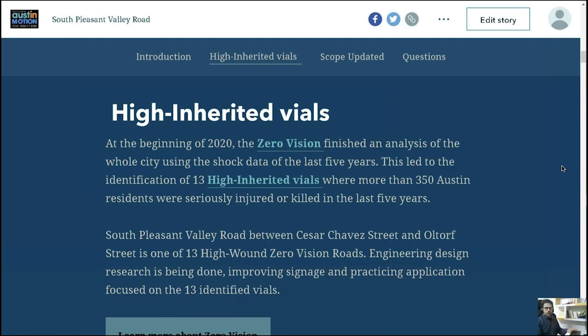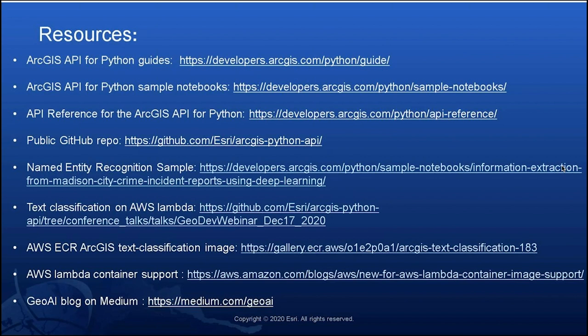We have now concluded an overview of what has been added and updated in the latest release of the Python API, which is going live today. For a deeper understanding of newly added models, you can visit the developer's website and go to the guides section. If you want to see more examples, go to the sample notebook section. To see the latest development on sample notebooks that haven't been published to the public website yet, you can visit the ArcGIS Python API GitHub repo and go to the samples and guides folder. With that, I would like to hand it back to Amy for Q&A.